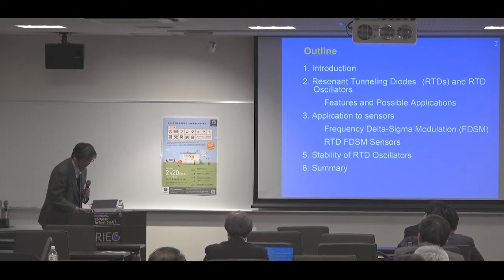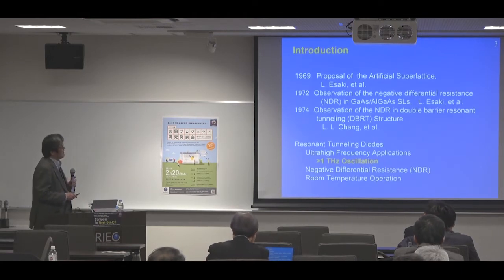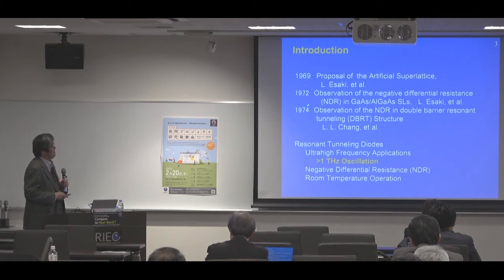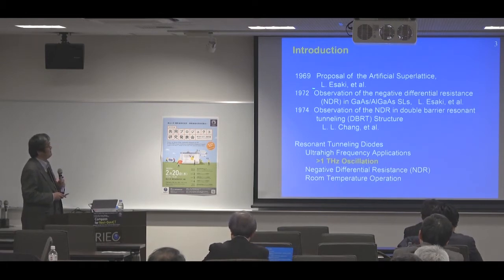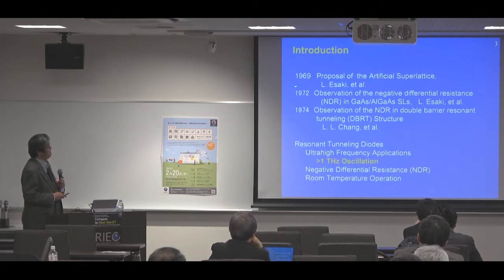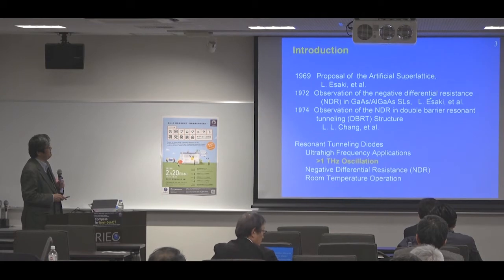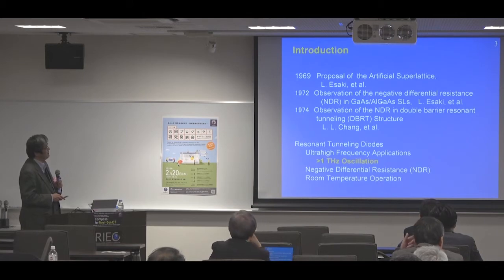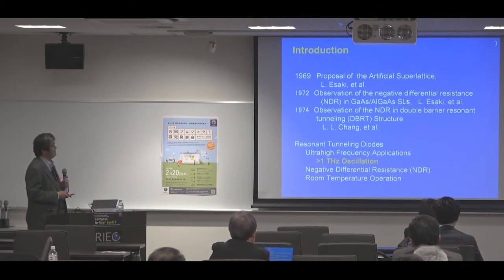Now I'll begin with the introduction. The resonatomic diodes have a relatively long history of about 50 years. It began with the proposal of the artificial superlattice by Professor Esaki in 1969, followed by the observation of the negative differential resistance — NDR in short — in gamma-aluminum-gallium-arsenide superlattices.